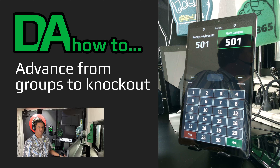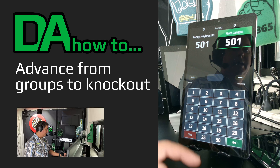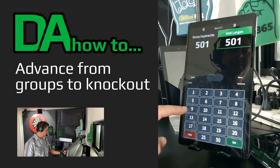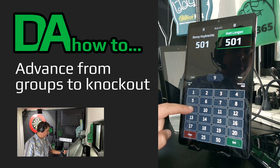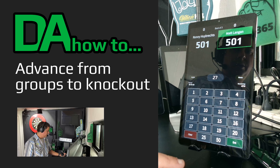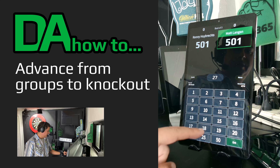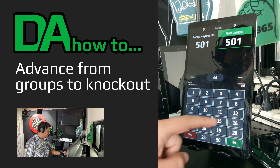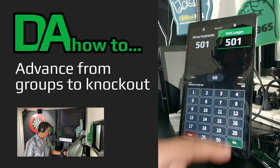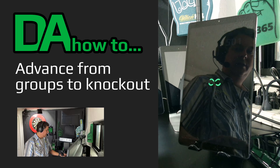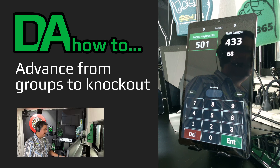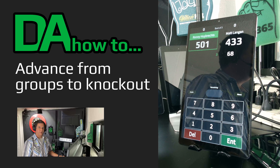For example, if you hit three nines, a seventeen, and a double twelve, you can hit the nine three times, the seventeen once, and the twelve twice to have your score automatically added up. Select Enter, and your score will be recorded.